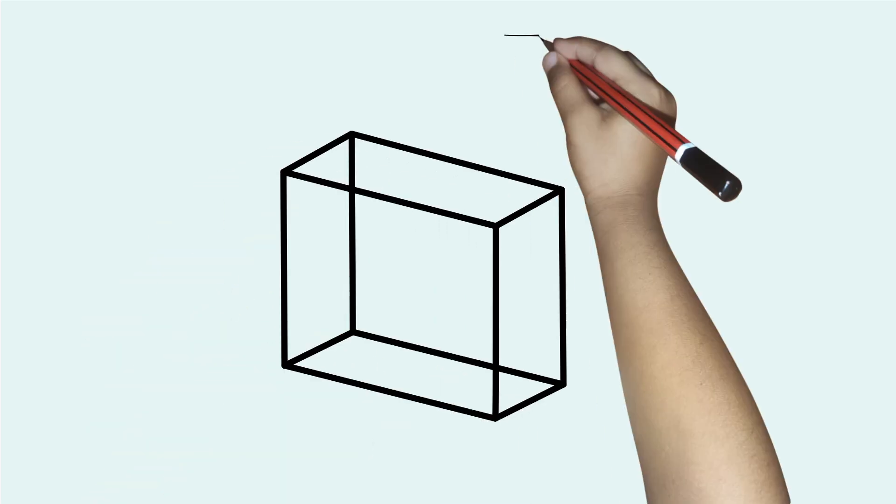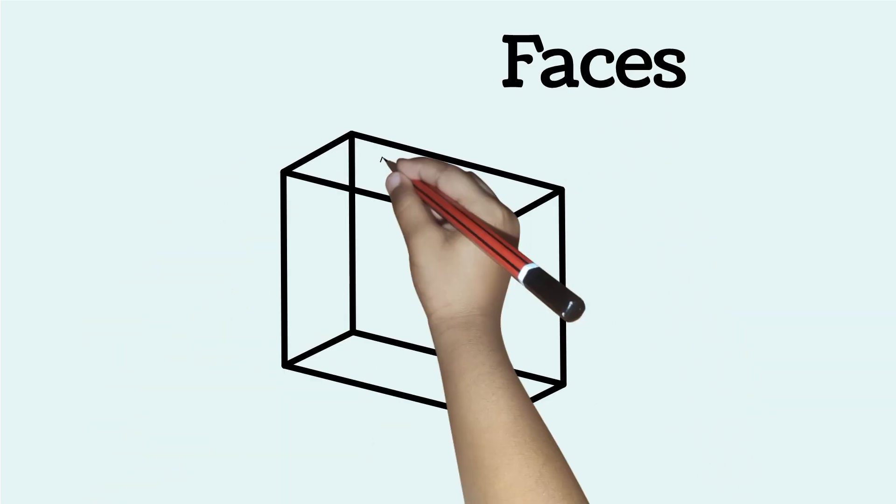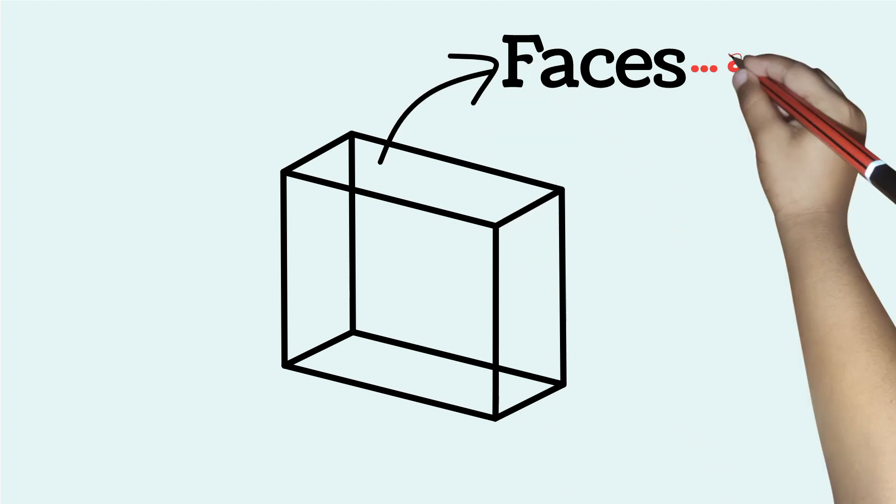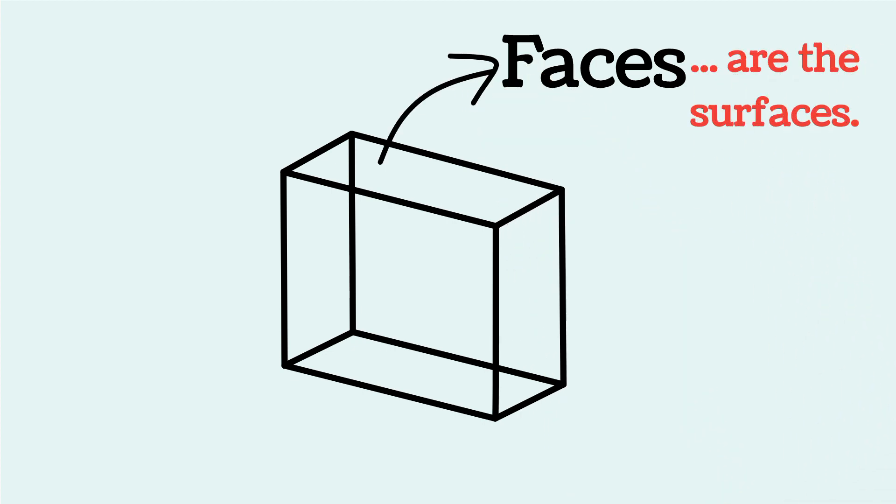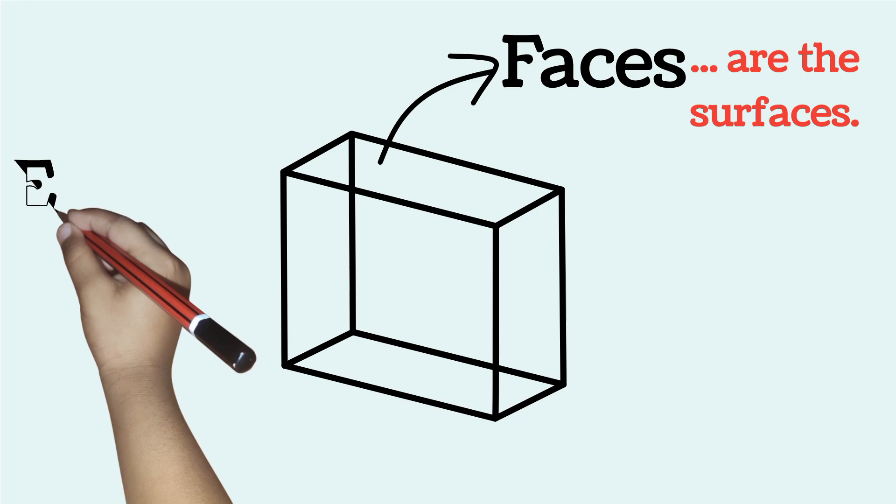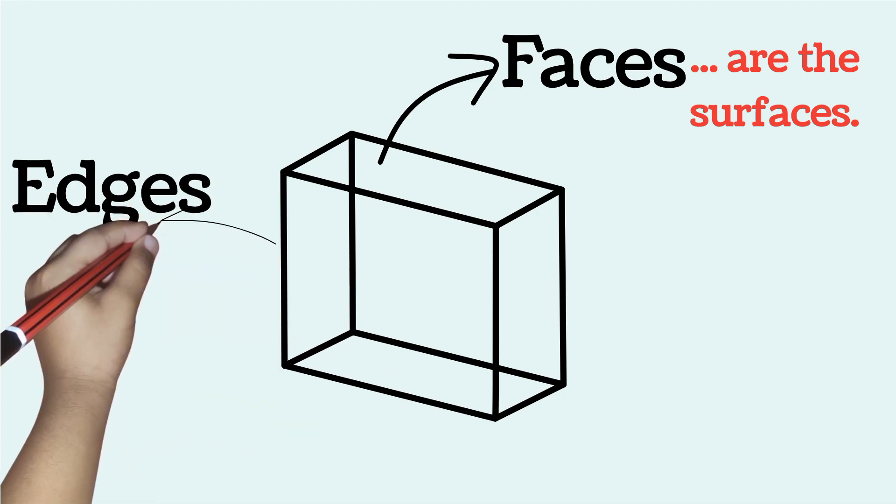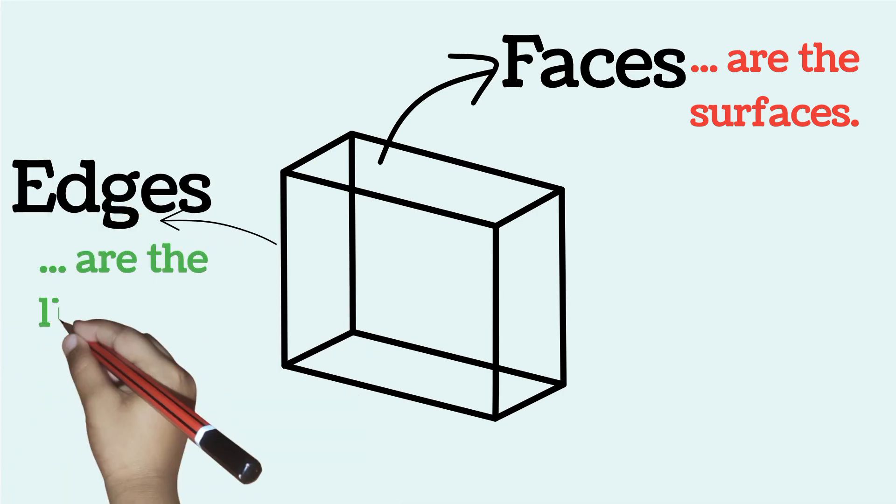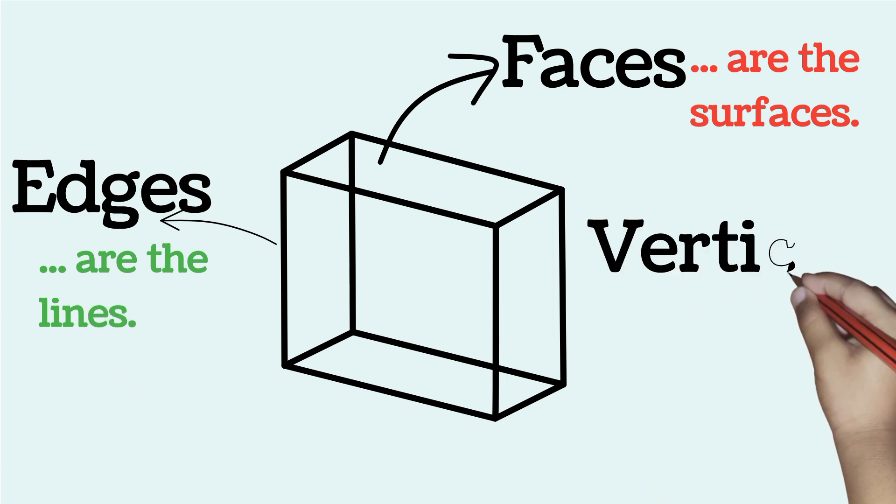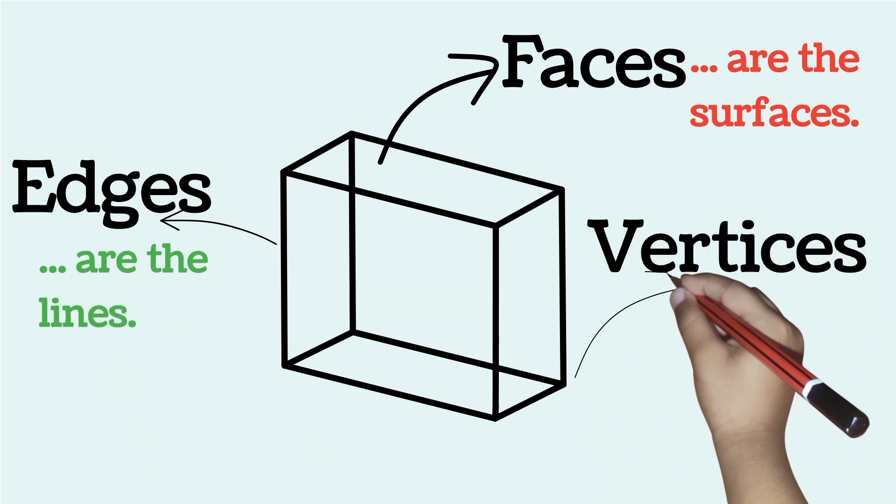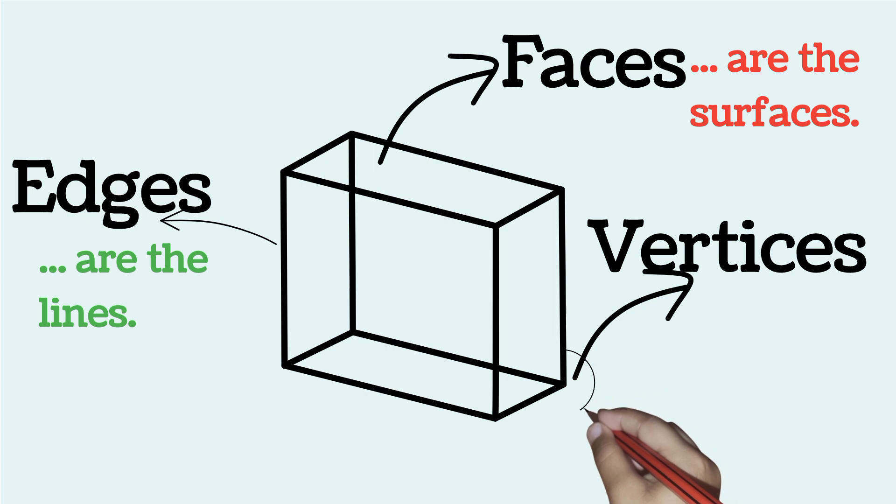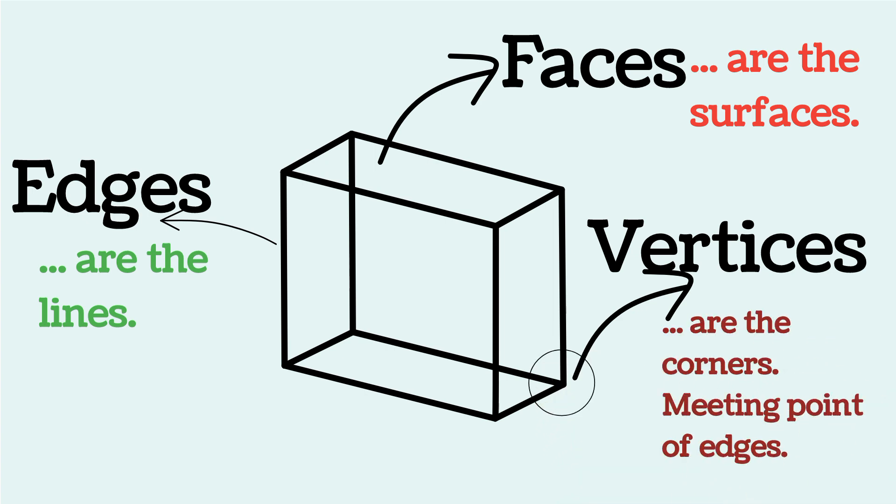Let's begin with the faces. We have the cuboid here. Faces are simply the surfaces. They are the surfaces. Edges are the lines that join together. And vertices are these angles or corners. You can call them the corners. Several corners. So the meeting points of edges are called vertices.